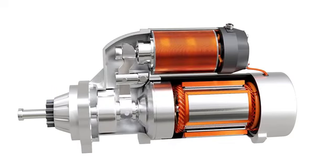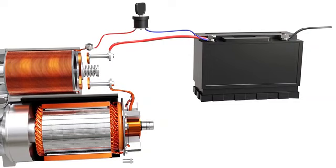The model shown here is a pre-engaged type starter motor used in modern vehicles. It uses an electric motor to provide torque to the crankshaft. The power for this motor can be drawn from the battery.